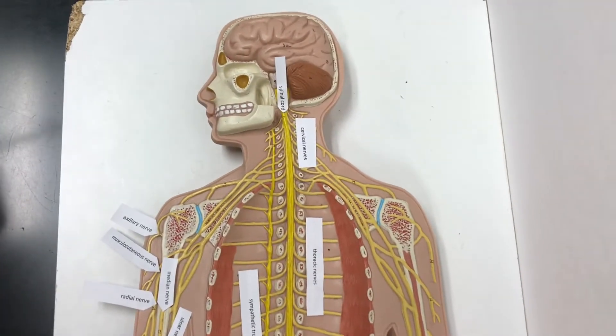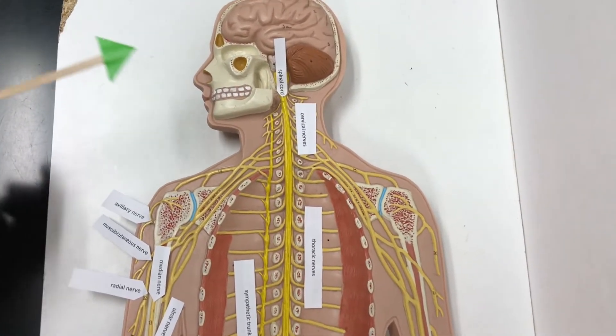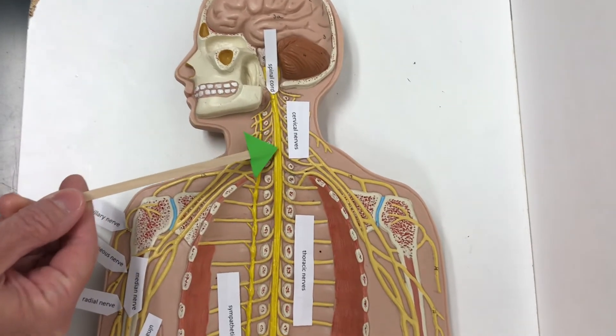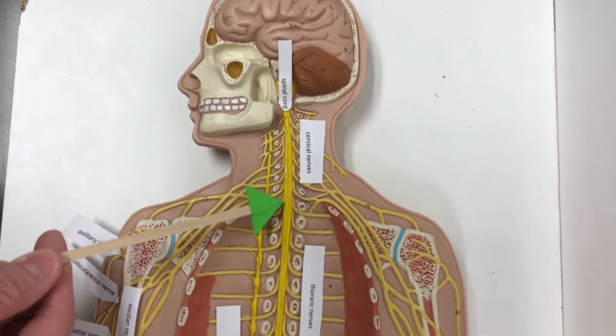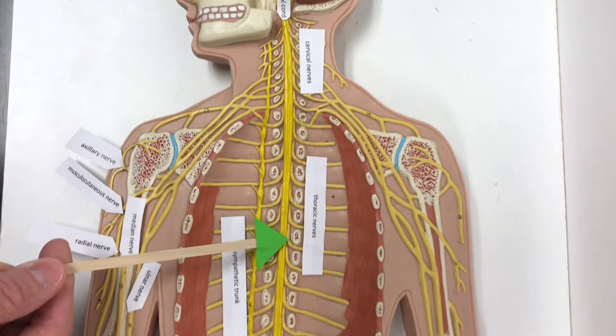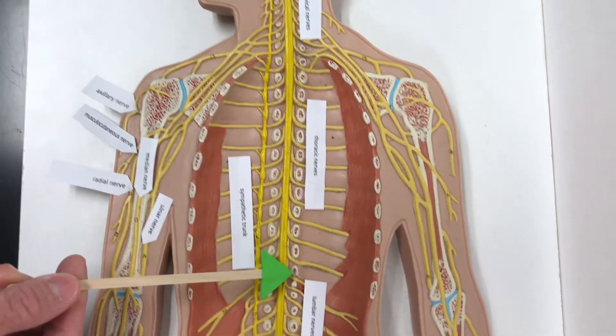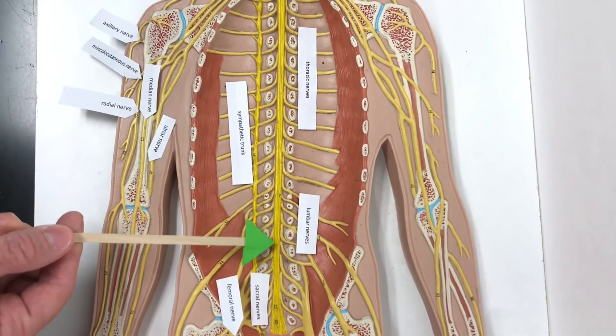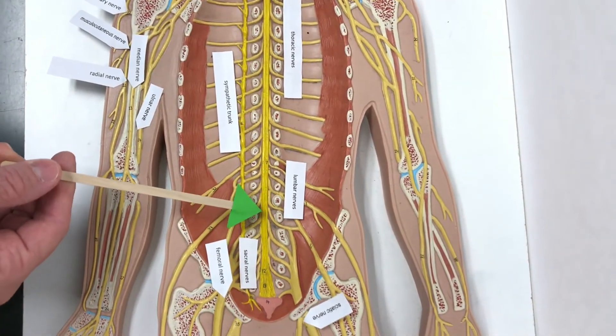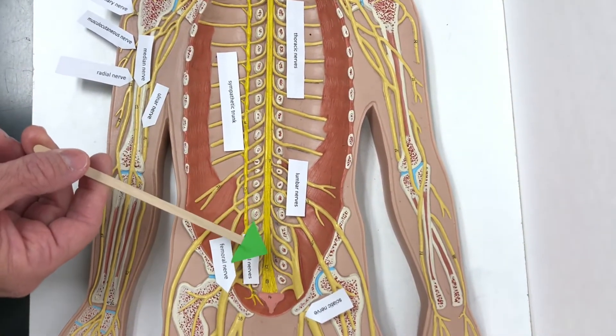Some major nerves of note in the body: we have the cervical nerves in the neck, thoracic nerves in the thoracic region, and lumbar and sacral nerves in the lower part of the spinal cord.